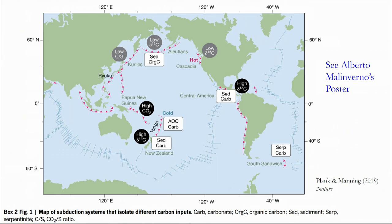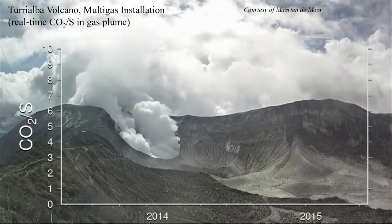For example, there are some subduction zones where we're only subducting mostly sedimentary organic carbon, like the Aleutians, or where we're subducting mostly sedimentary carbonate, or places like Tonga where we're not subducting any sediments at all — essentially just subducting carbon in the oceanic crust. We would argue that each of these regions is a natural laboratory to understand how these different forms of carbon recycle, and that's probably more relevant to coming up with a global recycling understanding. That's something about the inputs.